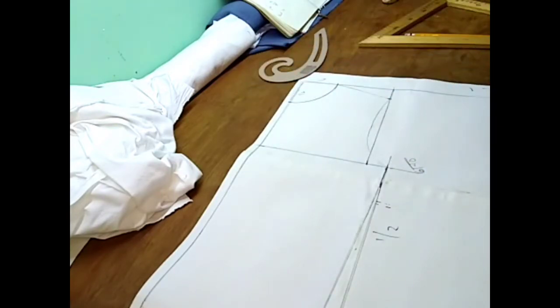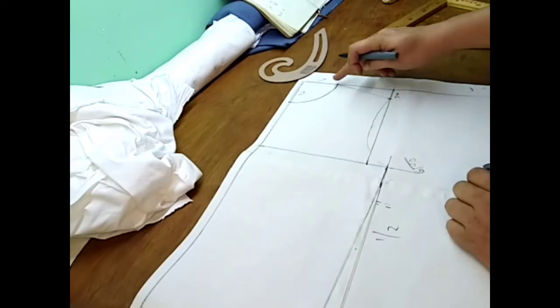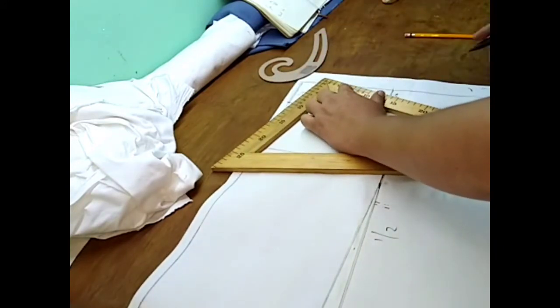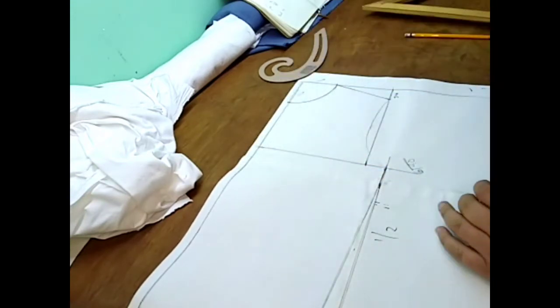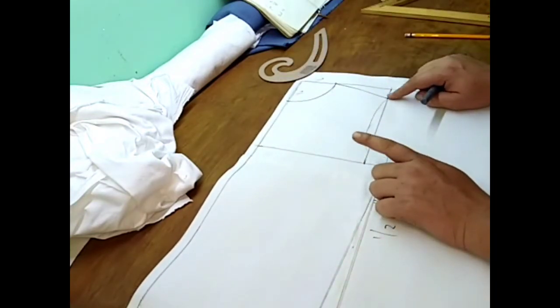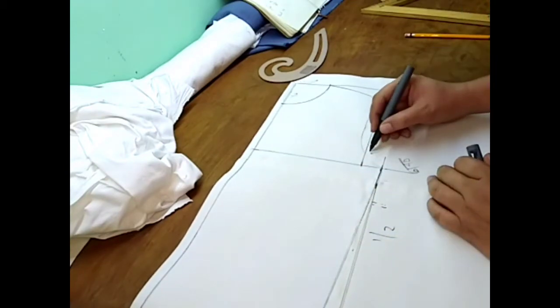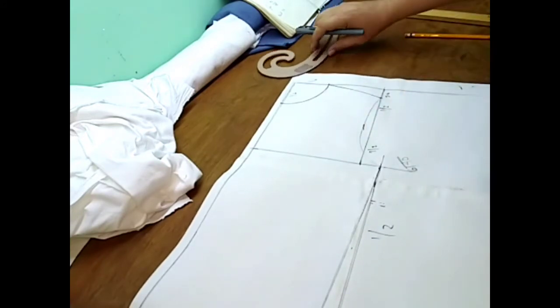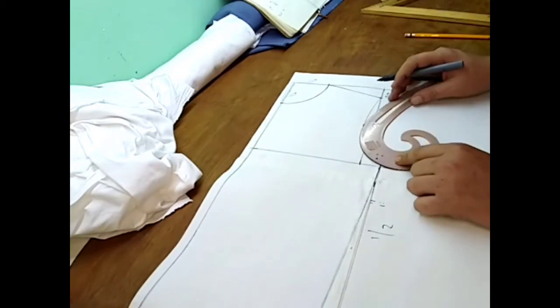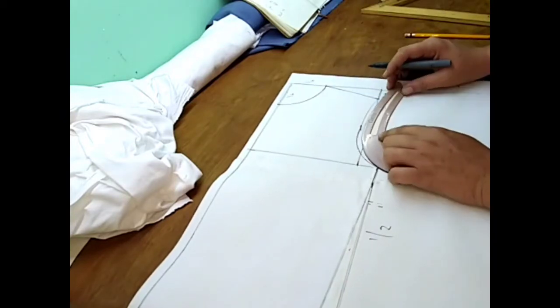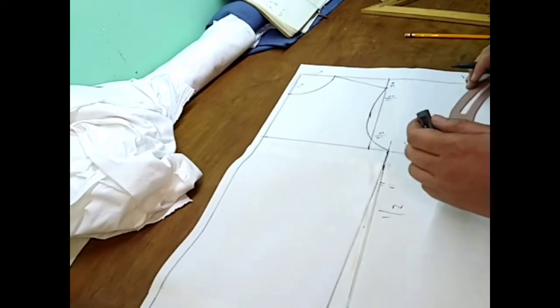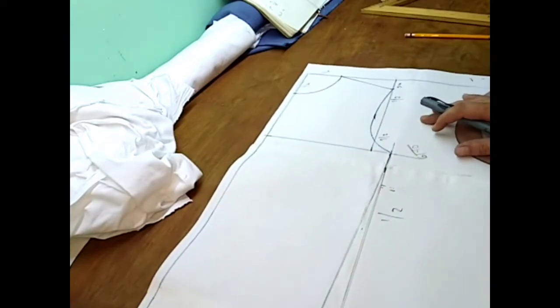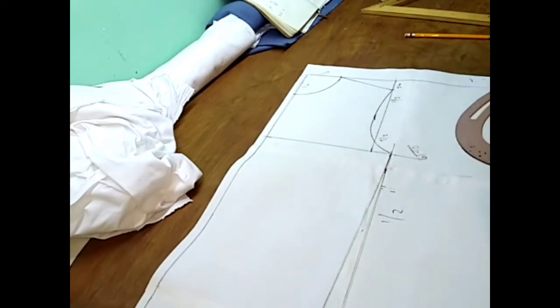Vamos a utilizar una regla curva, una regla francesa, y vamos a encontrar estos dos puntos, cuello horizontal y cuello vertical. De los 3 centímetros que bajamos acá, vamos a unirla con el cuello horizontal. Vamos a dividir esta cantidad de aquí a acá, dividimos entre 2. Con la curva francesa vamos a unir estos dos puntos. Unimos este y acá en curvita o semicurva unimos este. Hasta aquí va el procedimiento para el delantero.